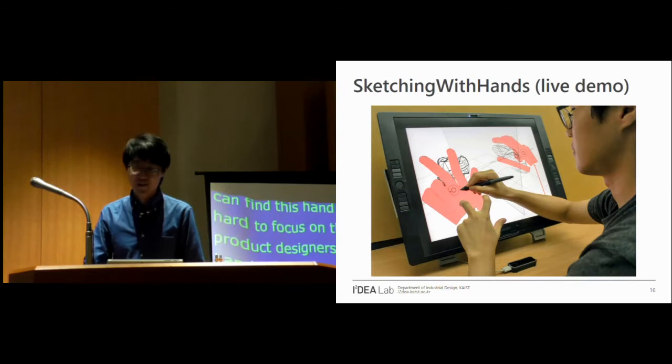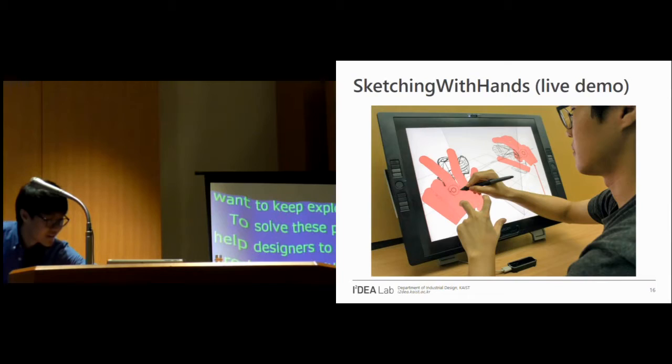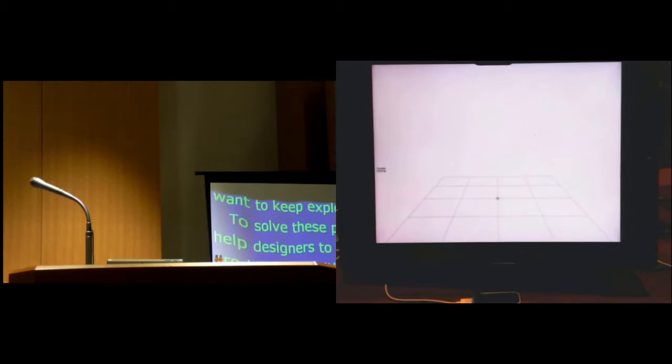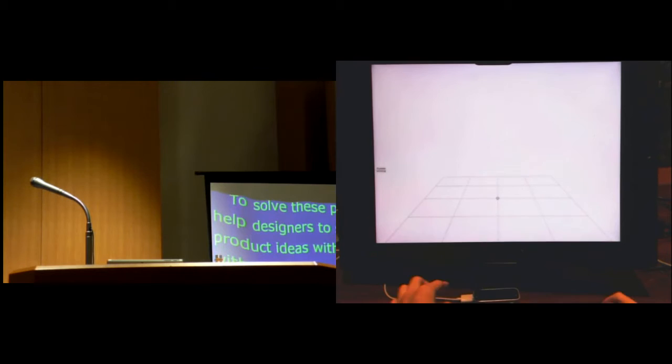So we propose Sketching with Hands, a 3D sketching system that incorporates a hand-tracking sensor. Let me show you how it works with a live demo. Sketching with Hands is a 3D sketching system. I can draw 3D curves with this pen on this tablet. And let me explain our key ideas first.